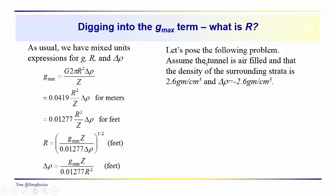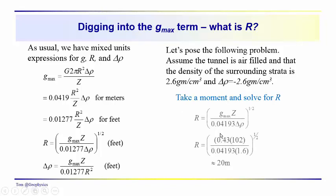So, we're going to pose the following problem. We assume that we have a tunnel. It's air-filled, and the density of the surrounding strata is 2.6 grams per cubic centimeter. So, that gives us a delta rho of minus 2.6 grams per cubic centimeter. Take a moment and solve for R. We're working in meters, so we'd be using this expression. And if you do, you'll find that the radius of that tunnel, just substituting in for the various terms, is going to be approximately 20 meters. So, hopefully you were able to work through that problem and come up with R.